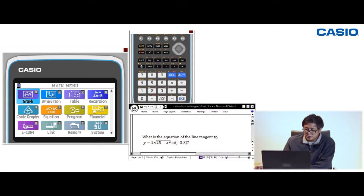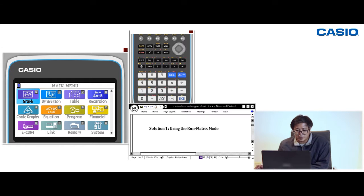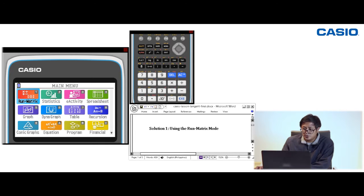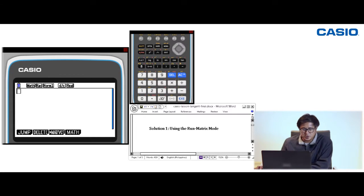We can actually do that by using the Run Matrix mode. I'll show you how to get the slope using this mode. Press Menu and use the cursors to go to mode number 1, Run Matrix. Press X to enter the mode. This is the calculator part of the CG50—it's a graphing calculator, but of course, it's still a calculator.